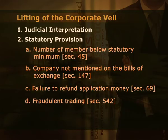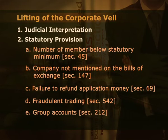Next, fraudulent trading under section 542. On the winding up of a company, if it is found that any business of the company has been carried on to defraud creditors, the court shall declare those persons personally liable for the debts and other liabilities of the company. Next, group accounts, section 212. Where the company has subsidiaries and group accounts, the principle of separate legal entity may be disregarded. Along with the company's own profit and loss account and balance sheet, subsidiaries and group accounts also have to be laid down. Thus, these are the circumstances where the veil can be lifted.